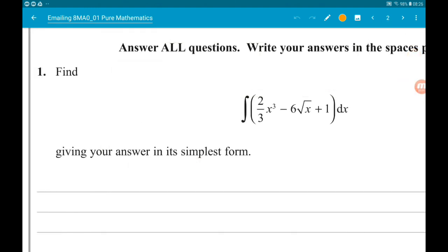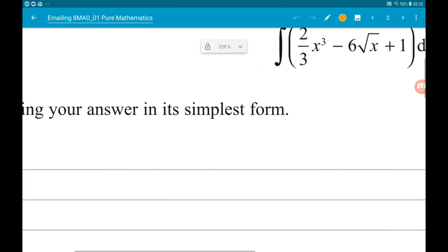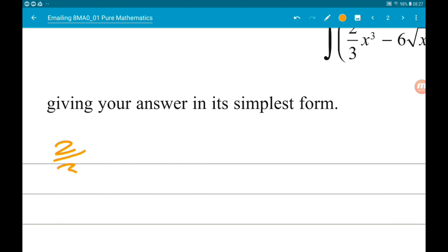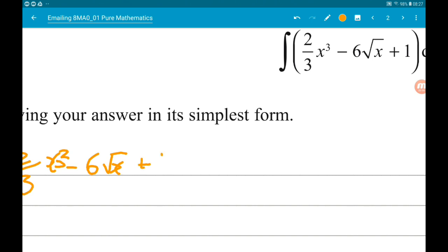Okay, question 1 wants us to find the integral of 2 thirds x cubed minus 6 root x and 1 with respect to x, giving our answer in the simplest form. So first of all, let's rewrite it. Let's rewrite that root x term in power form. So 2 thirds x cubed minus 6 root x and 1 is 2 thirds x cubed minus 6 x to the half and 1.